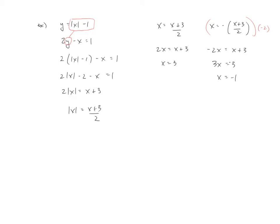Now we need to find the points of intersection, so we need the corresponding y-coordinates. We can go back to any of the original equations — it makes the most sense to use the one already solved for y. If x is 3, the absolute value of 3 is 3, so y equals 2, giving the ordered pair (3, 2). Similarly, substituting x equals negative 1 gives the absolute value of negative 1 minus 1, which is 0, giving the ordered pair (negative 1, 0). Those are the two solutions to the original system.